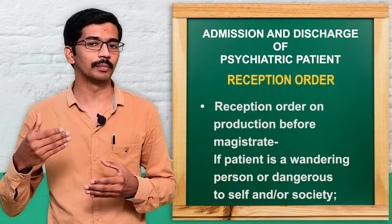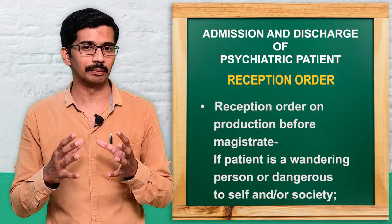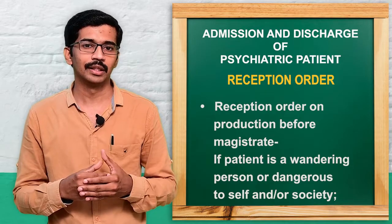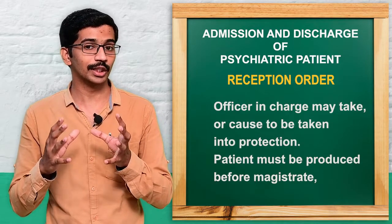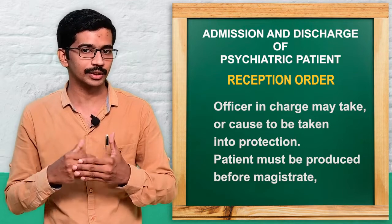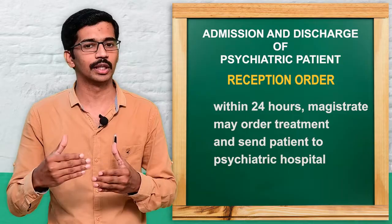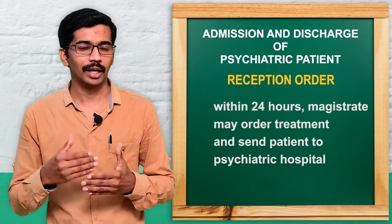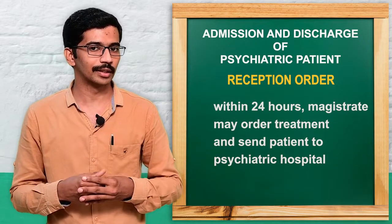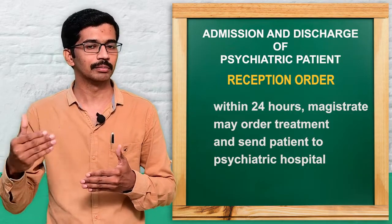Reception order on producing before the magistrate applies when the patient is a wandering patient or is dangerous to himself or to society. In that case, every officer in charge of a particular police station is authorized to take the patient into custody for protection. Within 24 hours, the person must be produced before the magistrate, who will give an order for treatment and the patient will be sent to or detained in the psychiatric hospital.